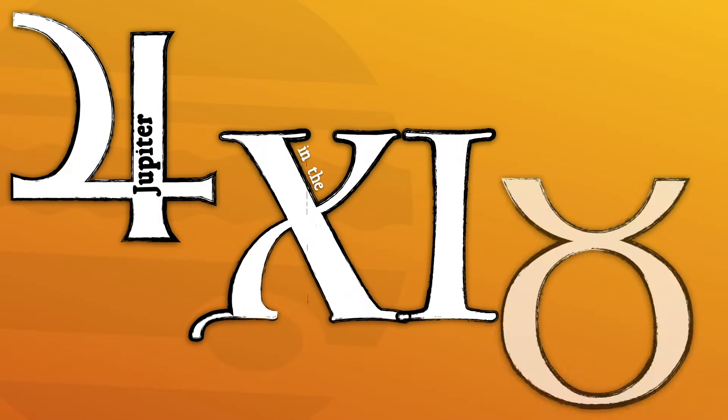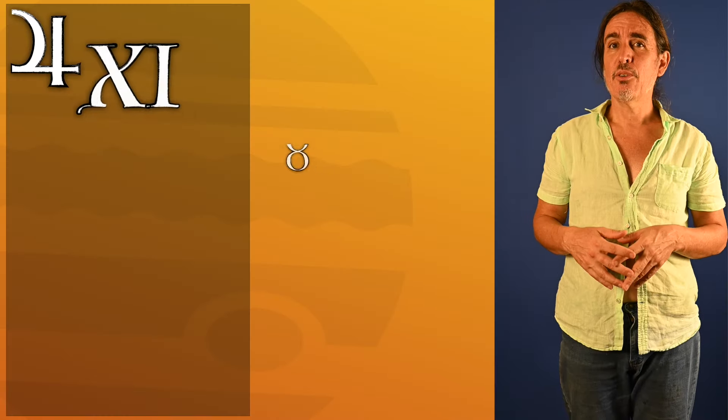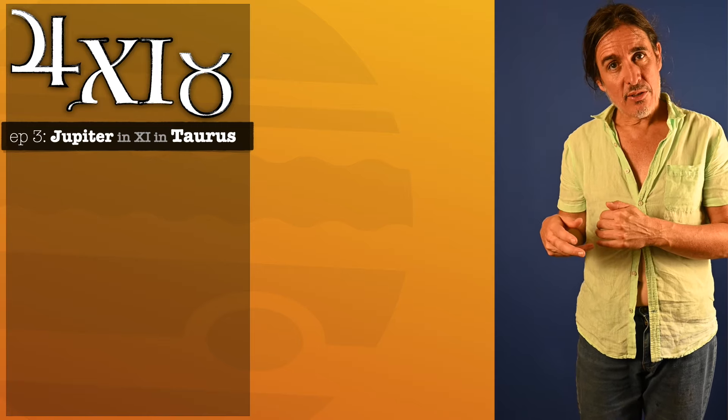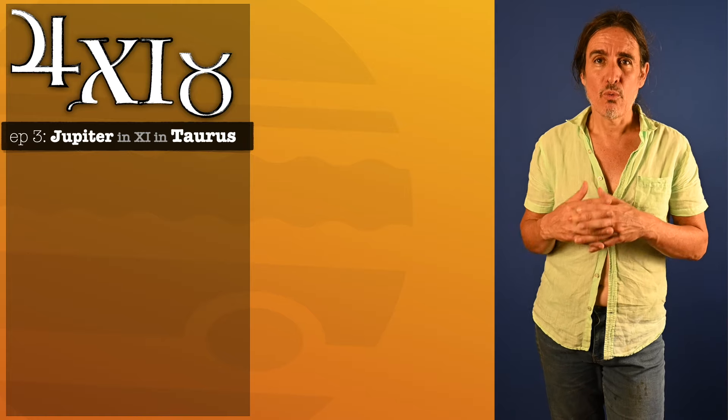Jupiter in the 11th house in Taurus. In this video we will get into all the ins and outs of that and we will look at it in a real life scenario via the birth chart of Rob Zombie.